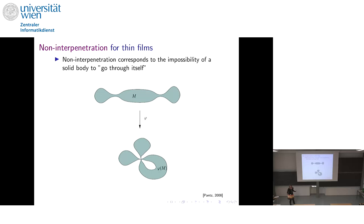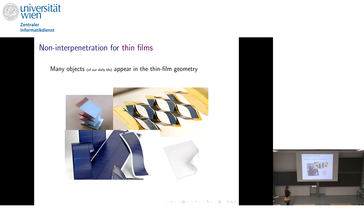Physically, if you think about what you experience from daily life, this should be somehow forbidden. In our mathematics, we need to formulate models in such a way that this never happens. What are thin films? Here are some examples: solar cells, actuators, and my favorite application — a sheet of paper, which everybody has. Those are thin films. I would like to understand what non-interpenetration means in exactly this geometry, when one of the dimensions is zero — that's our mathematical idealization.